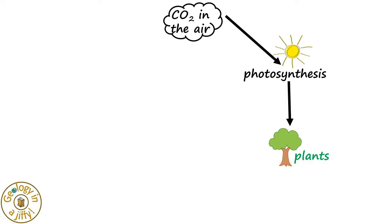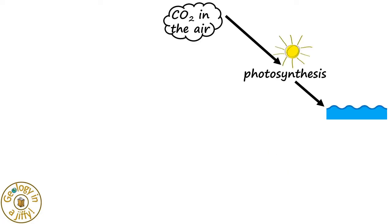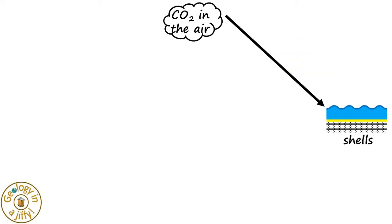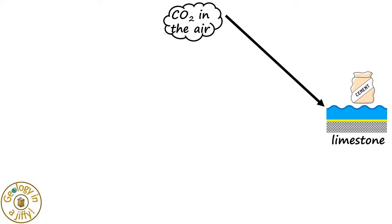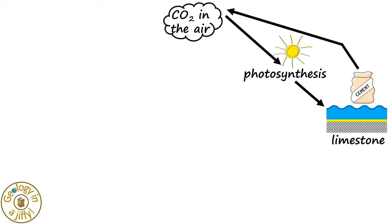It is not only land-based plants that absorb carbon dioxide by photosynthesis. In our seas and oceans, plankton absorb carbon dioxide, and carbon dioxide is also used by organisms to build their shells. These may be ultimately forming limestone, which humans can then burn to make cement, a process which releases carbon dioxide back into the atmosphere.